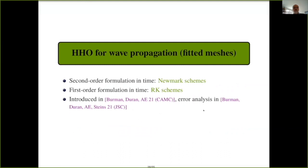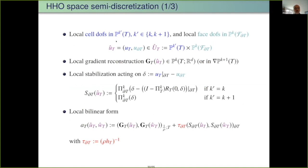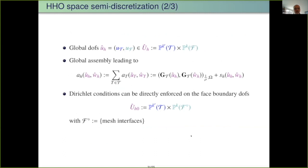Now we go to wave propagation. The wave equation has a second-order time derivative, second-order spatial derivative, and some coefficients — extendable to elastodynamics. In weak form, with physical coefficient indices, it is well known that you have conservation of energy in the absence of forces: kinetic plus internal energy is conserved. We use the HHO method, with k prime indicating a choice between equal-order or mixed-order. We do the gradient reconstruction and assemble as before.